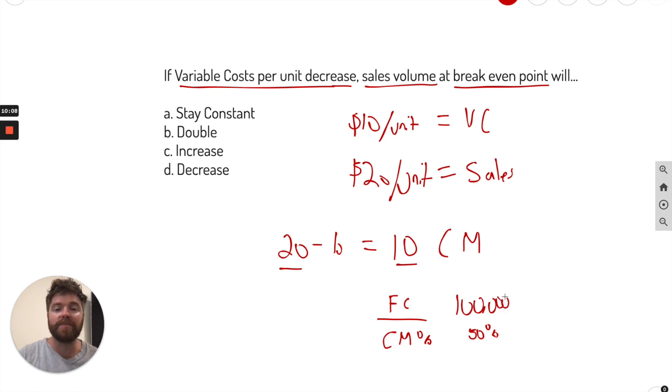Let's just go ahead and get that number here. So $100,000 divided by 50%, $200,000. Okay, so that's using the constant. Now we're going to say it decreases. That's what it says.